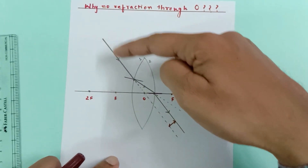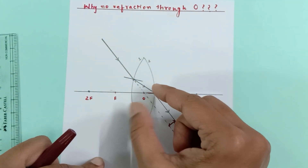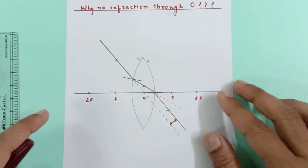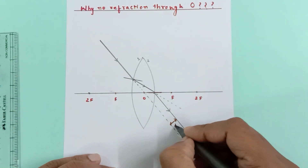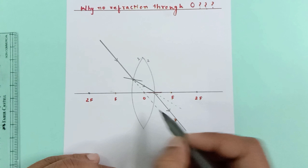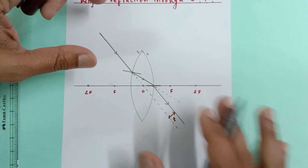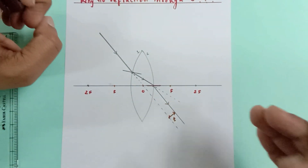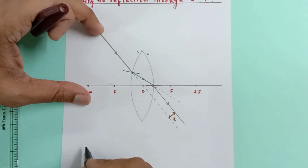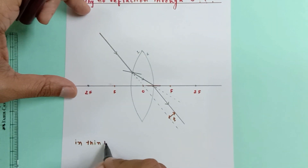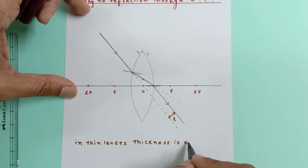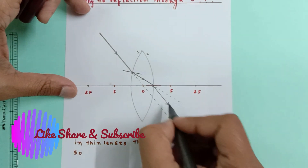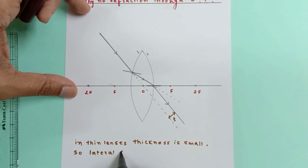Instead of going straight, the light rays are getting refracted and due to the effect of refraction the light ray is displaced. But if the thickness of the lens is very small, this lateral shift can be ignored. The lateral displacement t is directly proportional to the thickness of the lens. In thin lenses, thickness is small, so this lateral shift t is also negligible.